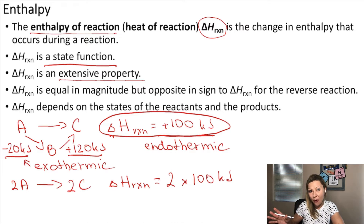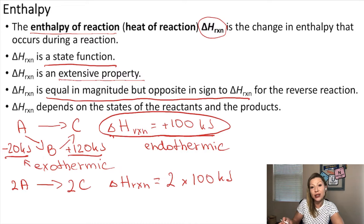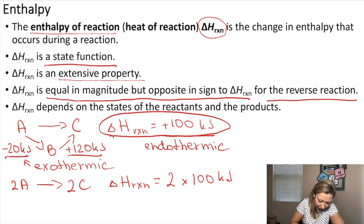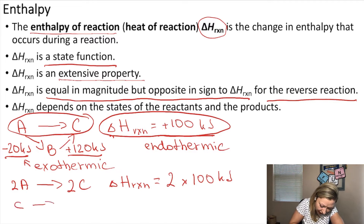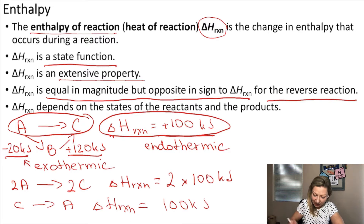Enthalpy is a lot of fun because you get to play with it. For example, the reaction enthalpy is equal in magnitude but opposite in sign to the enthalpy change for the reverse reaction. So we can go ahead and reverse this A to C reaction and have C forming A as a product. In that case, the change in enthalpy will equal in magnitude — so it's still going to be 100 kilojoules — however, opposite in sign. So this is going to become an exothermic reaction.